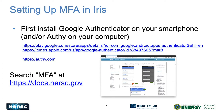To set up MFA in IRIS, first you'll need a device to get your token from. We're using Google Authenticator; there's also an option if you don't have a smartphone or want a backup, which is Authy. Google Authenticator is available in the Google Play Store and the Apple App Store. There are links in the slides and detailed walkthroughs on docs.nersc.gov — search for MFA in the search box.